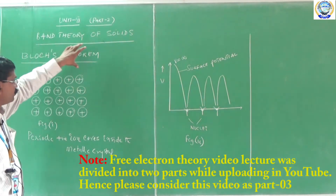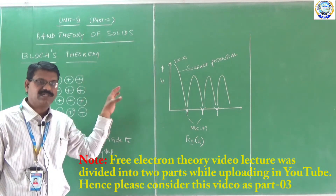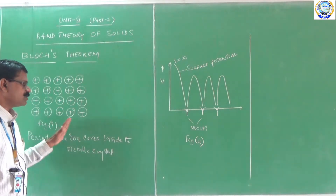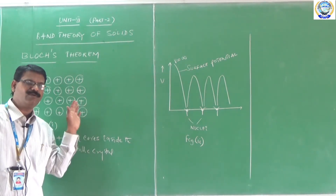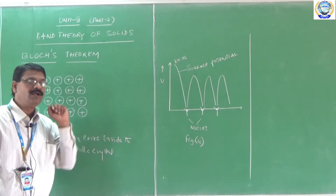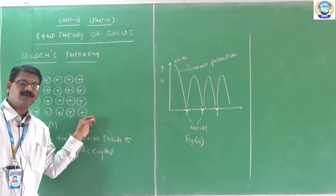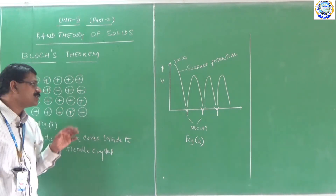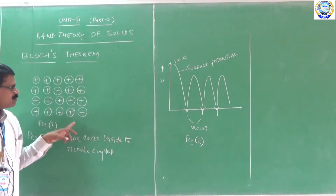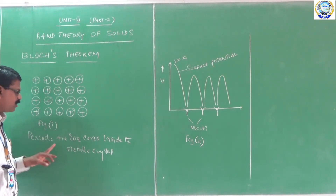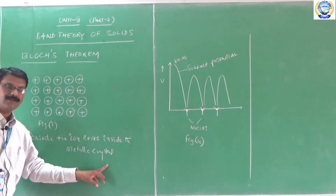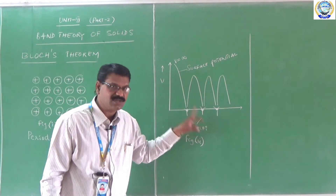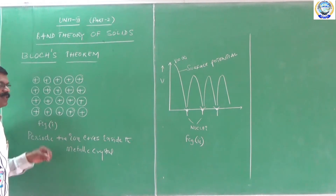Before explaining Bloch's theorem, I would like to explain the relationship between crystals and crystal lattices. Crystals — metals and alloys — are crystalline in nature. When conduction electrons are released, they move towards the positive ion core inside. The first diagram explains periodic positive ion cores inside the metallic crystal, and the second represents the one-dimensional periodic potential existing in crystal substances.